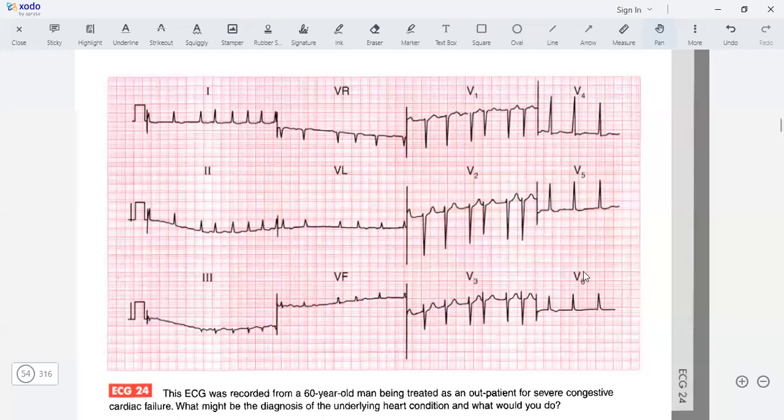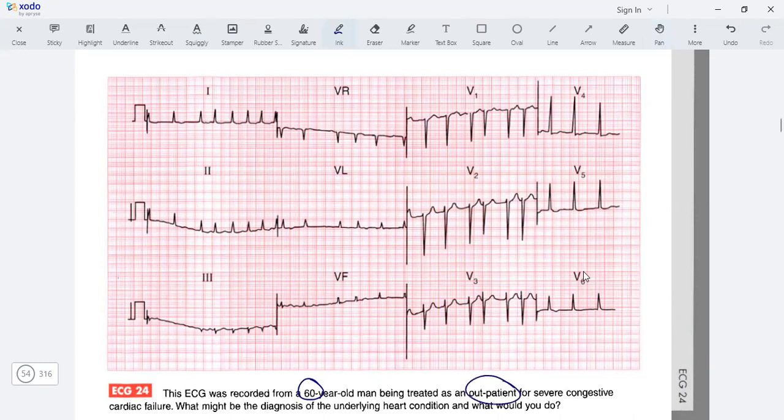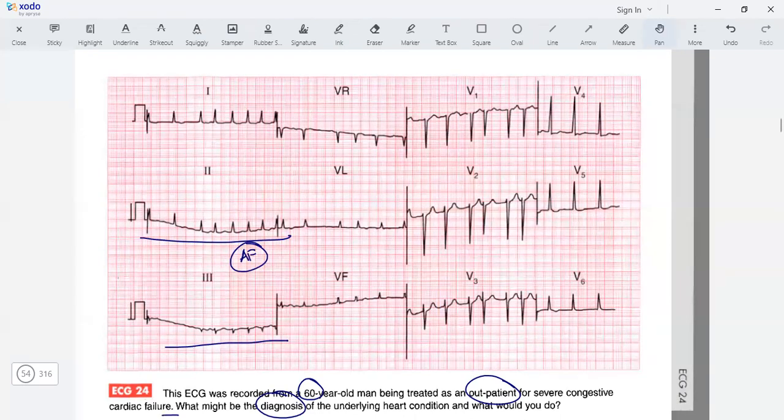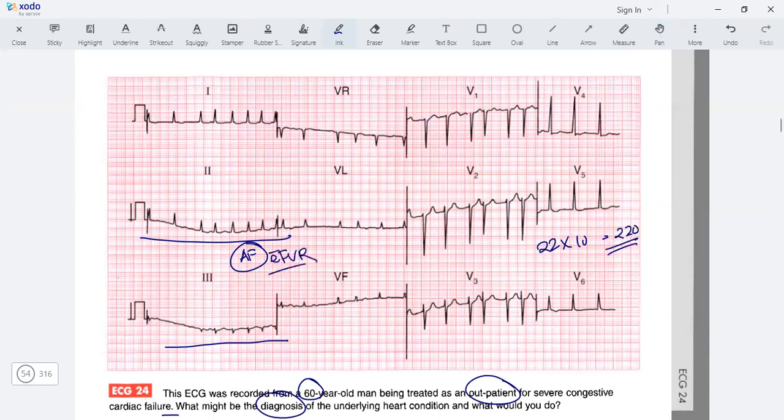Moving to another ECG: a 60-year-old man with severe congestive heart failure. The rhythm is irregular. This is AF - the baseline is not showing a definite P wave, so this is more of an AF rhythm. The rate is high. Counting from here: 1, 2, 3, 4, 5, 6, 7, 8, 9, 10, 11, 12, 13, 14, 15, 16, 17, 18, 19, 20, 21, 22 - that's 220. The rate is around 220, so AF with a fast ventricular rate.